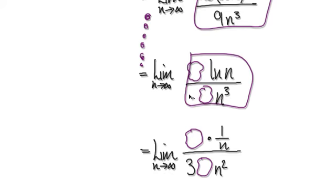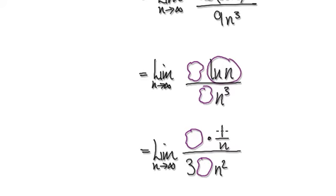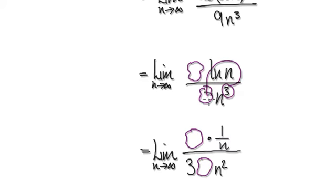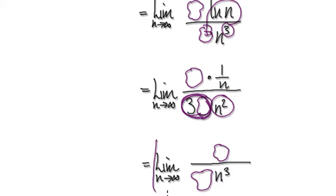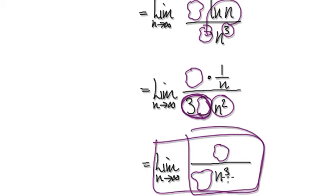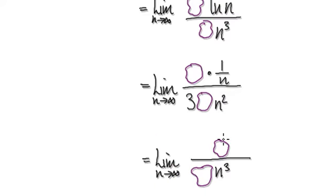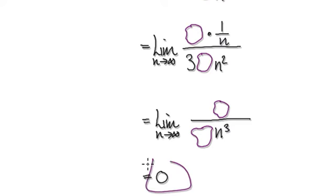Differentiate it for the last time - if you differentiate this it gives you one over n times the constant. Differentiate the bottom and you have whatever constant you don't care about, then n to the power of two. Tidy this up and the very last result will be this. Now you can see that as n tends to infinity, the denominator is going to get bigger and bigger and bigger, meaning the limit will be zero.